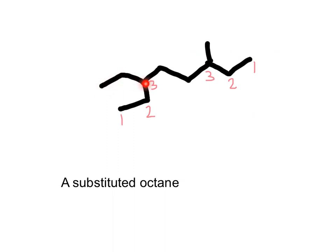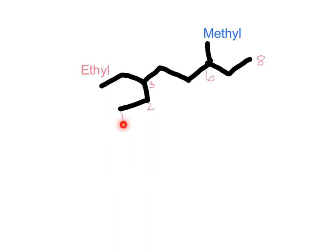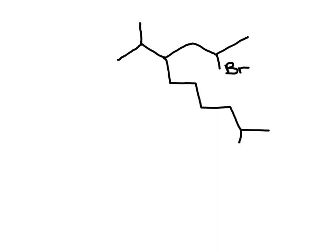This is a substituted octane — eight carbons long with substituents in position number three. We need to decide which end is carbon number one. If this end is carbon number one, we find a methyl group on carbon three; if the other end is carbon one, carbon three holds an ethyl group. According to IUPAC, we label carbon one as the end that gives the smallest number to the alkyl group that comes first in alphabetical order. The name of the molecule is 3-ethyl-6-methyloctane.